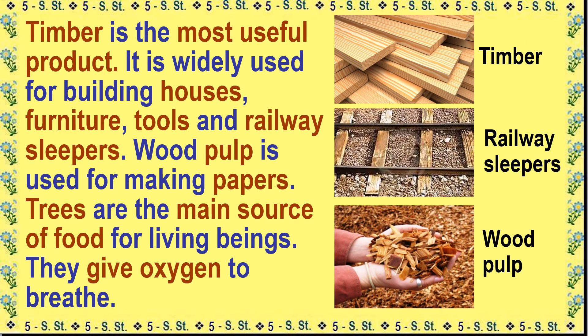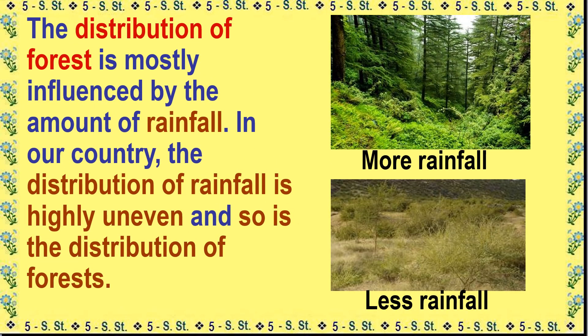Timber is the most useful product. It is widely used for building houses, furniture, tools and railway sleepers. Wood pulp is used for making paper. Trees are the main source of food for living beings; they give oxygen to breathe. The distribution of forests is mostly influenced by the amount of rainfall. In our country, the distribution of rainfall is highly uneven and so is the distribution of forests.